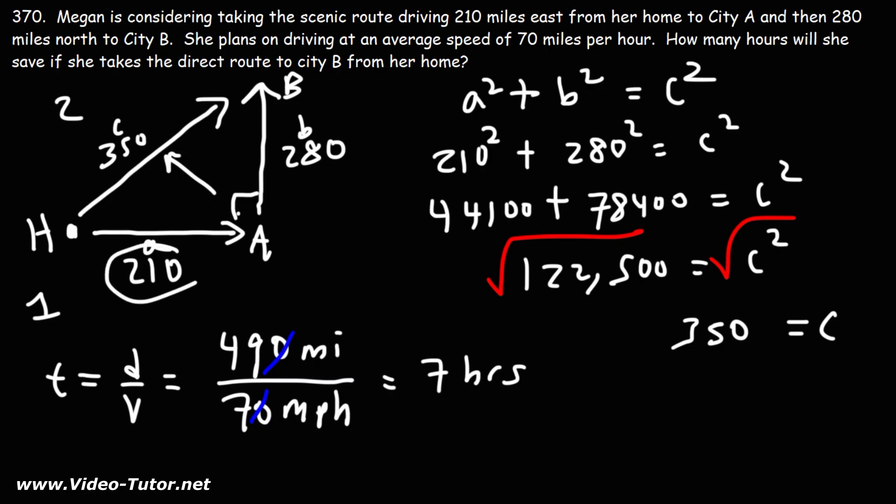But if you notice that these two numbers were in the ratio of 3 and 4, then you know you're dealing with the 3-4-5 triangle. You just have to realize that 210 is 70 times 3, and 280 is 70 times 4. So the other side, you just multiply 70 by 5 to get 350. That's why it helps to recognize those special right triangles.